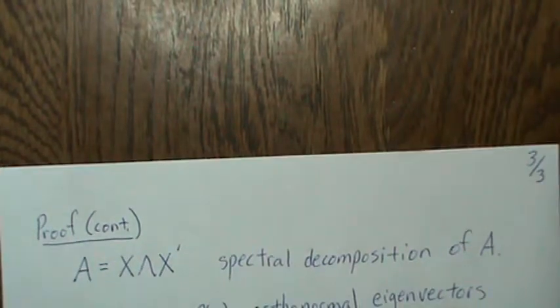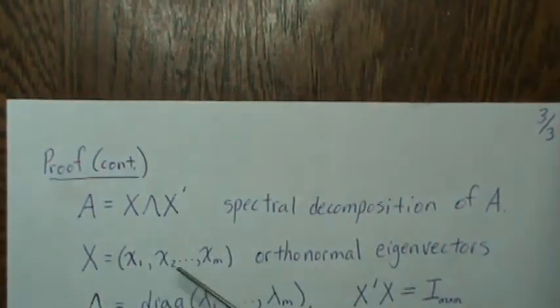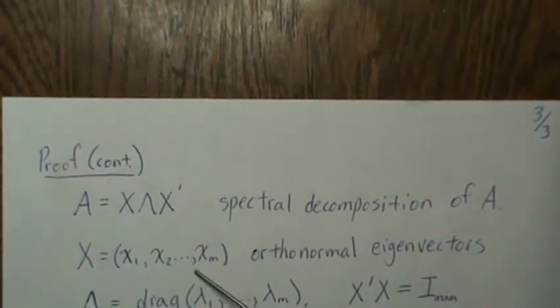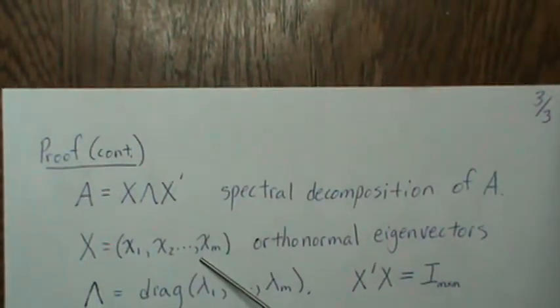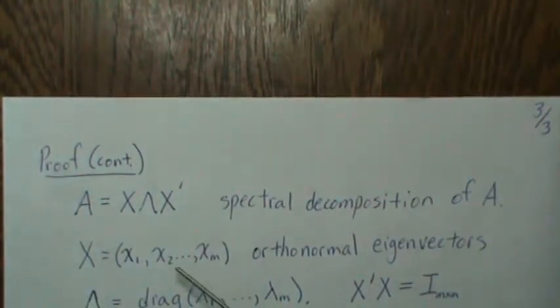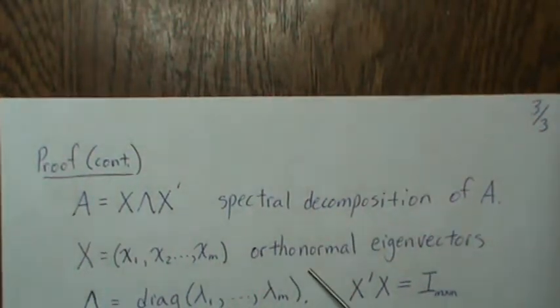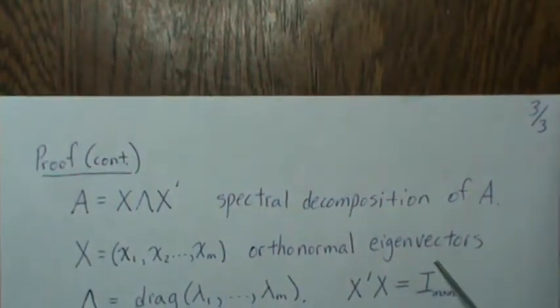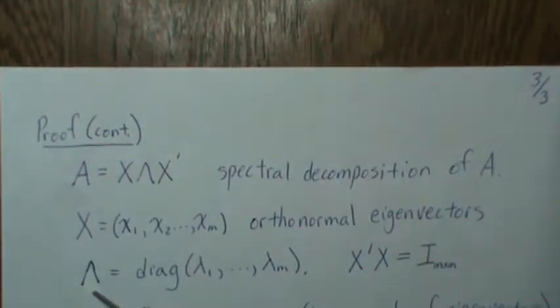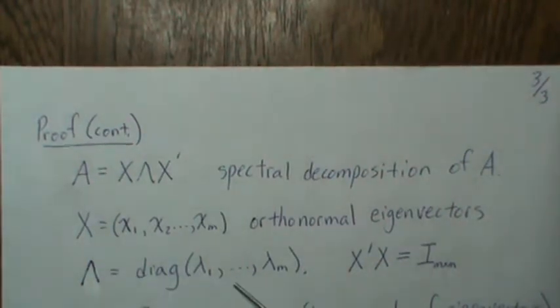The vectors or the columns are the orthonormal eigenvectors, and we can just say that they're normalized vectors, and because it's symmetric it's also orthonormal. And then this is a diagonal matrix with the diagonal elements of the eigenvalues.